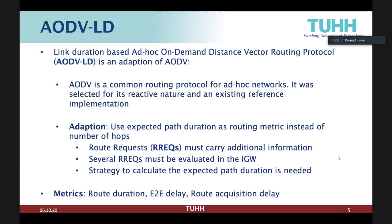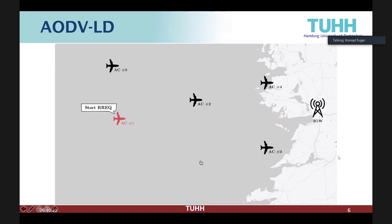For the evaluation of the routing protocols, we are most interested in three things. First, do the routes found with AODV-LD actually last longer than routes found with AODV — does this whole idea even make sense? We are also very interested in delays, as communication over the North Atlantic corridor is often quite time sensitive. We are interested in the end-to-end delay for regular packets and also the route acquisition delay, because the entire process of setting up a route takes longer with AODV-LD since we are not answering the first route request but waiting a bit. To make this more visual, I prepared a video showing how the route request procedure looks for AODV-LD.